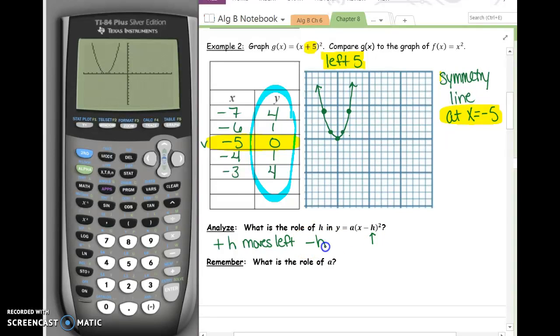And if it says minus H, it moves right. The next question is, what is the role of A? Do you remember from the very first thing we did when we came back from break? That A value tells us how wide or how narrow. And if the A value is negative, it tells us that the graph opens down. So A controls how wide or how narrow and whether it opens up or down.